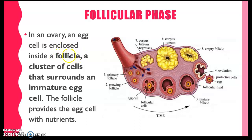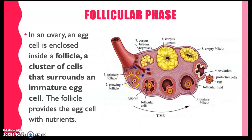As I mentioned, a follicle is a cluster of cells that surrounds an immature egg cell. As you can see here, there are actually many follicles. When we were born, we already have 2 million egg cells surrounded by follicles. However, every month only one mature egg is being released. What happens to the other follicles? The other follicles with their egg cells disintegrate. This is the egg cell and surrounding it are follicular cells.